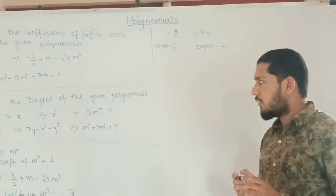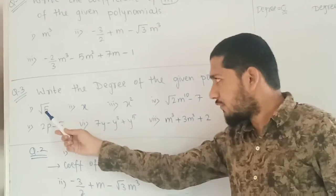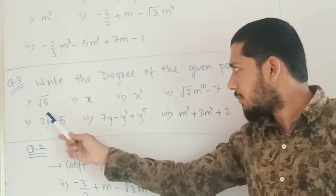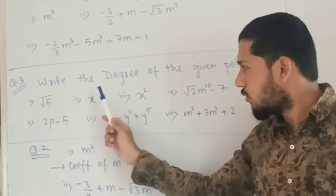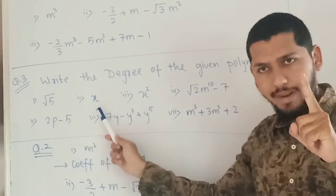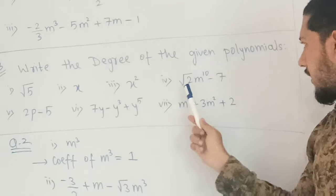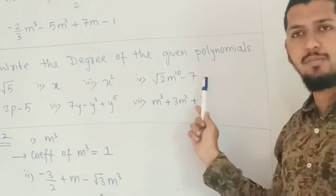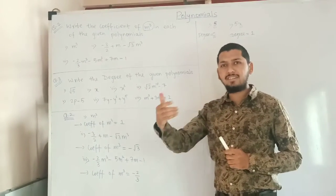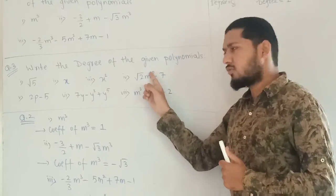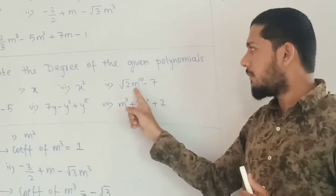All remaining examples will be easy. The question says: write the degree of the given polynomials. First, root 5 — no variable, so degree is 0. Second, x — only variable, no power written, so degree is 1. Third, x squared — power is 2, so degree is 2. Fourth, root 2 times m raised to 10 minus 7 — two terms are given, and we consider the term with the highest power. The highest power is 10 from m raised to 10, so degree is 10.